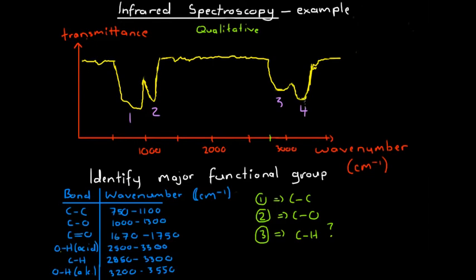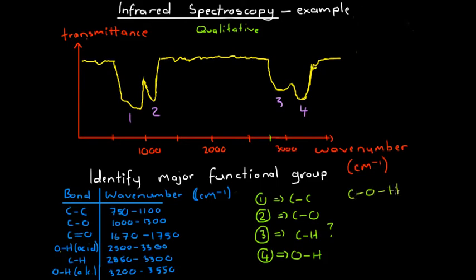Trough number four occurs at a wave number of about 3200–3300. That fits well into the range of the hydroxyl functional group — the alcoholic oxygen-hydrogen bond. This also validates our earlier finding of a carbon-oxygen bond, because if we have an alcoholic O-H bond, it is often accompanied by a carbon-oxygen bond. That gives us extra confidence that we're on the right track.